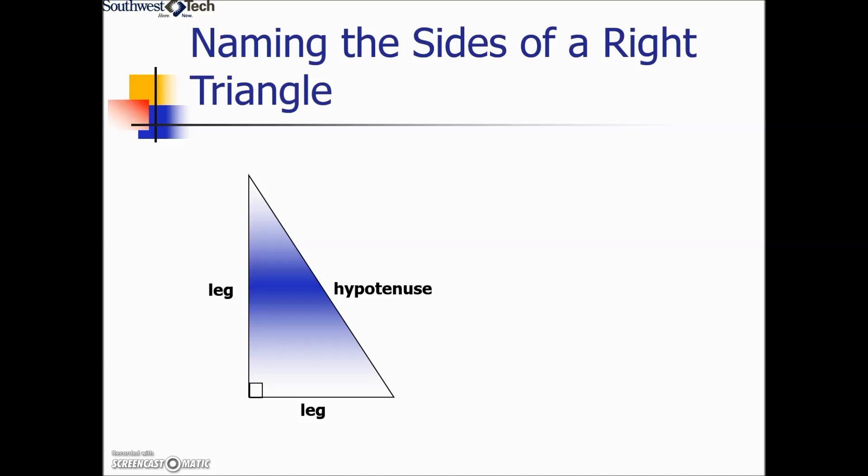When we first looked at a right triangle, we named the longest side hypotenuse and left the generic term leg for the two sides that make up the right angle.